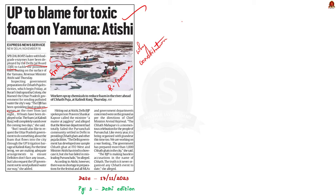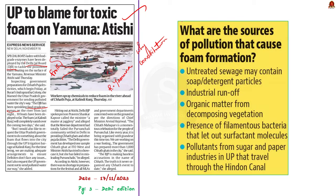The release of untreated or poorly treated effluents is the main culprit causing frothing in Yamuna. This includes sewage from parts of the city not connected to the sewage network and industrial waste. Apart from this, surfactants and phosphates from detergents in households and industrial laundry find their way into the river as all the sewage is not treated.